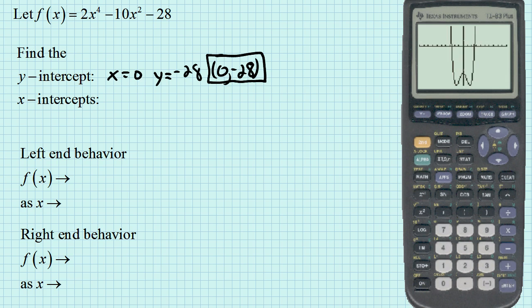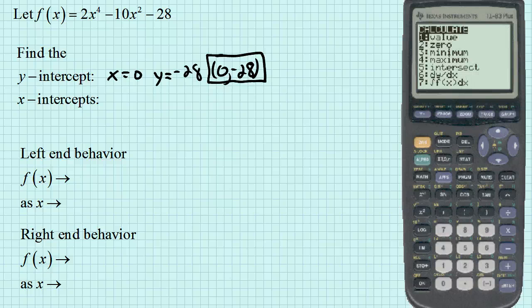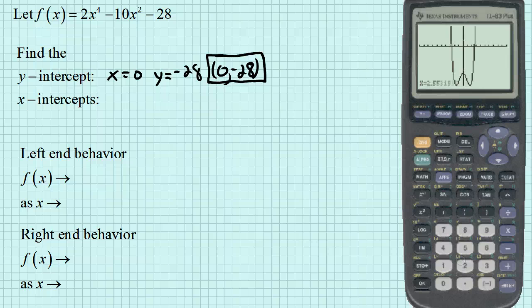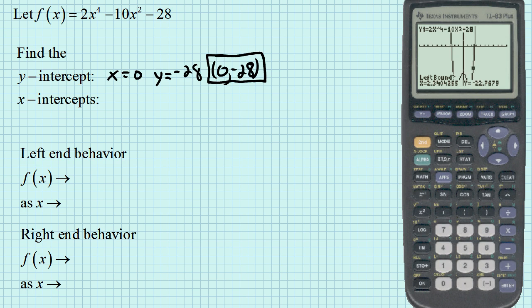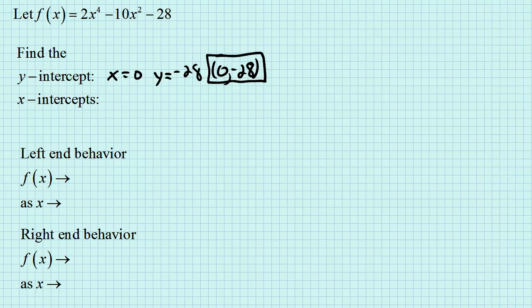To use the graphing calculator to get the zeros, above the trace button is something called calc. So you hit second trace. The number 2 option is the one you want. The way it works is you go to the left of the thing you think is 0, you go to the right of the 0, and then you hit enter. It guesses for you what the 0 is. If they wanted three decimal places, we'll call it 2.646.